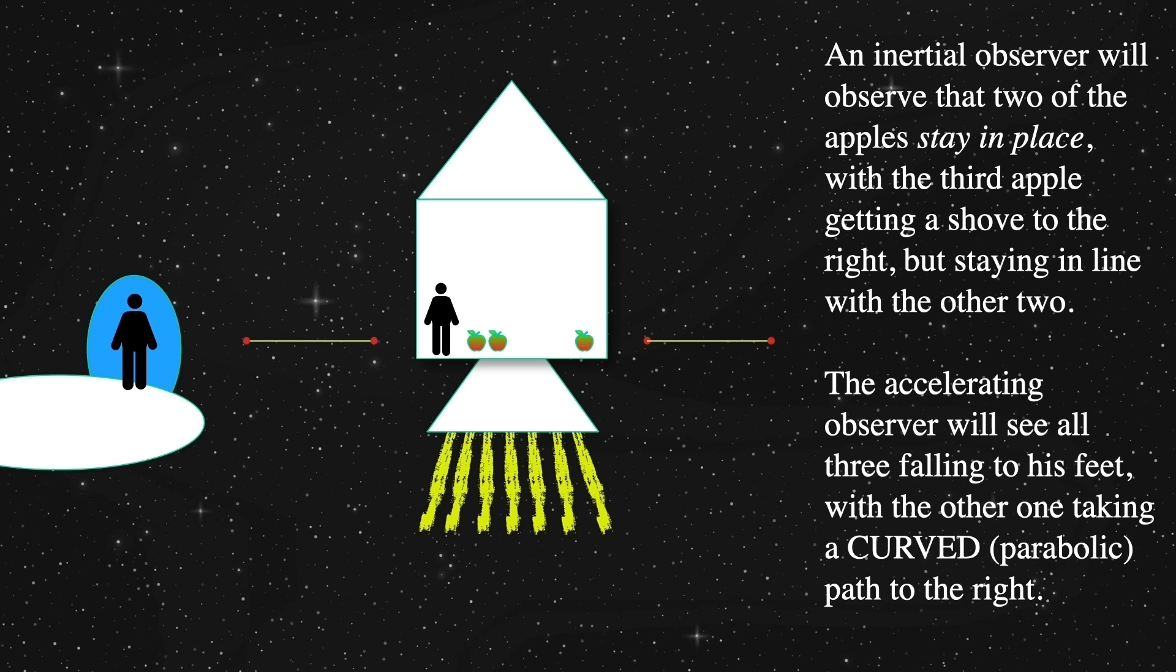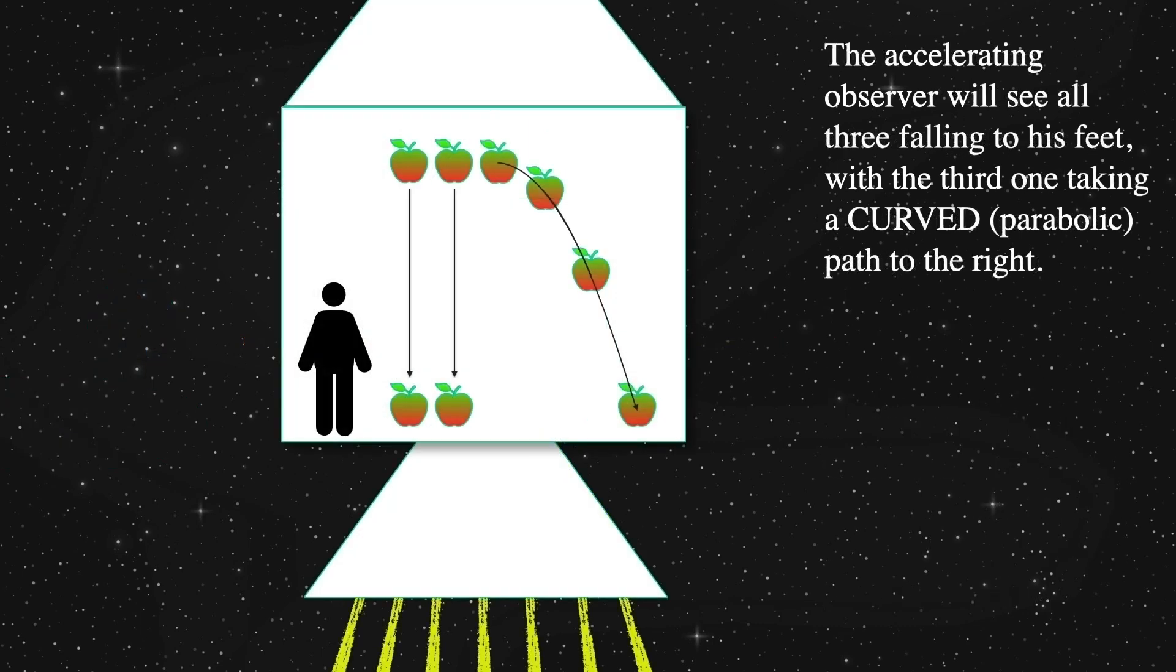But now let's look at a summary of all these steps. As you can see, according to Elton, inside the rocket, the apples fell and the rightmost one traced a parabolic curve downward. This is just like on Earth if you throw something off a ledge. Now let's assume the rocket was accelerating at 9.8 meters per second squared and that the rocket's windows are closed.